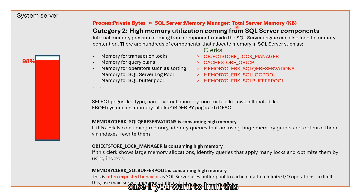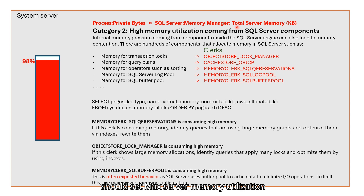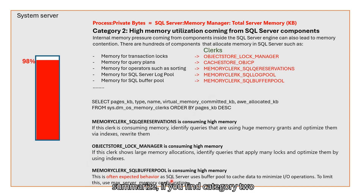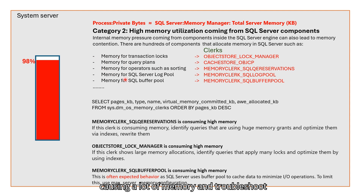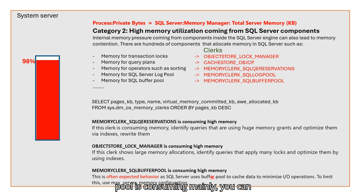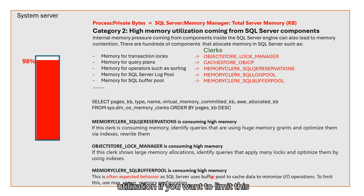If you want to limit buffer pool memory utilization, you should set the max server memory configuration in SQL Server. To summarize: if you find category 2 is a cause, run the clerk query and identify which clerk and corresponding component is causing high memory, then troubleshoot accordingly. But if you find Buffer Pool is consuming mainly, you can often ignore it and set max server memory utilization if you want to limit it.